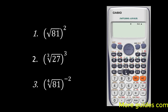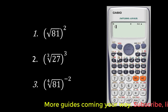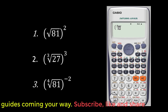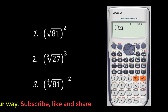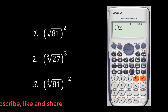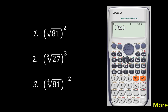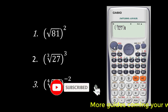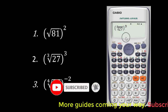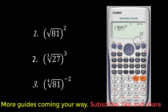Let's go to number 2. You open your bracket again. This time I'm looking for the cubic root, so I press shift and this particular key to get the secondary function. Type in 27, scroll to the right, close the bracket, and then type in to the power 3. The other option is you can use the shift key before pressing the X squared key, which gives the secondary function X to the power 3. Press equal to and it gives you 27.